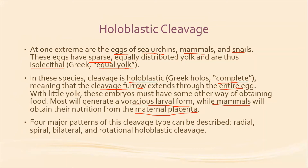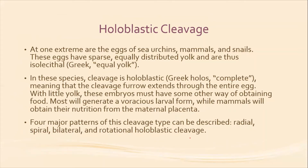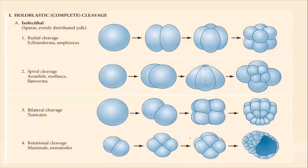There are different types of holoblastic cleavage, which can be further described as radial, spiral, bilateral, and rotational holoblastic cleavage. Let's see these with the diagram.